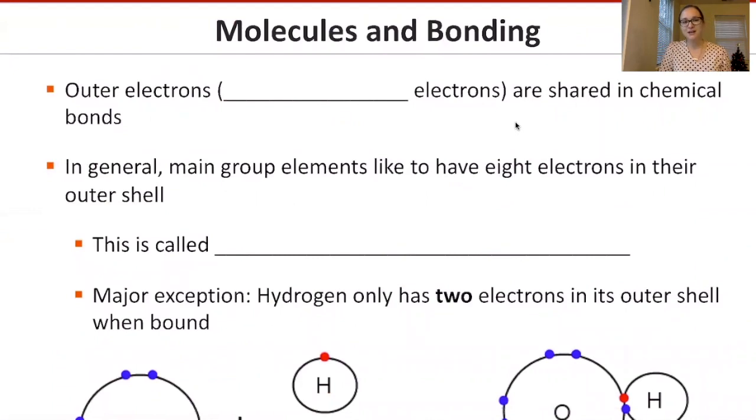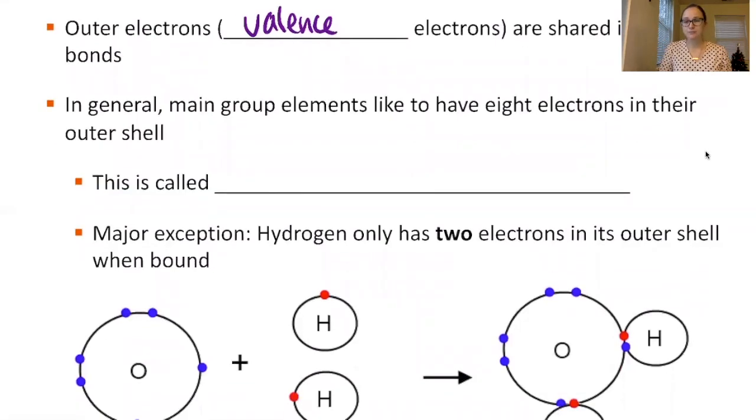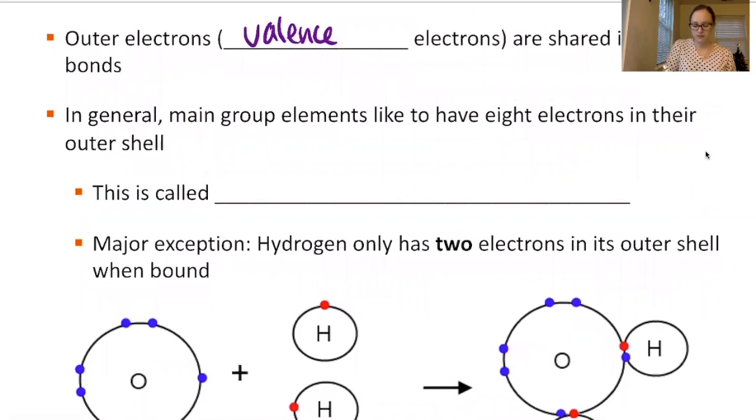Our outer electrons, called valence electrons, are shared in chemical bonds. These are the ones on the outside that have access to bond to other atoms. In general, main group elements like to have eight electrons in their outer shell. This is called the octet rule.